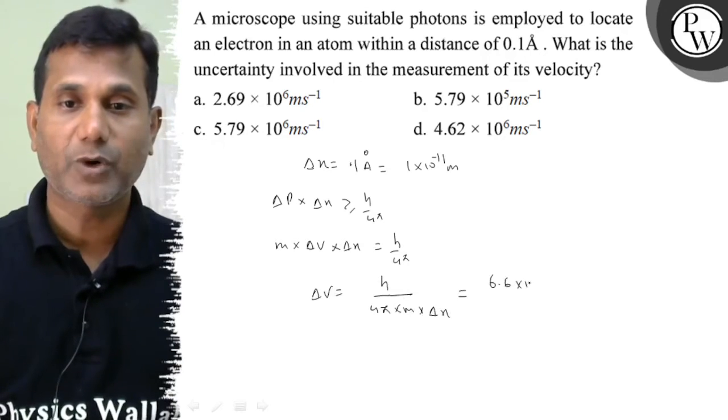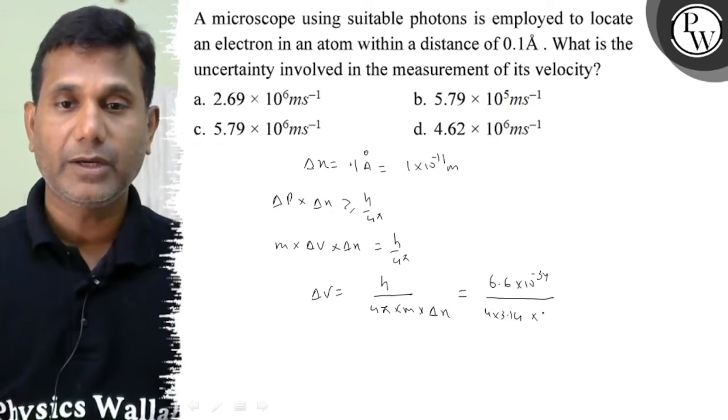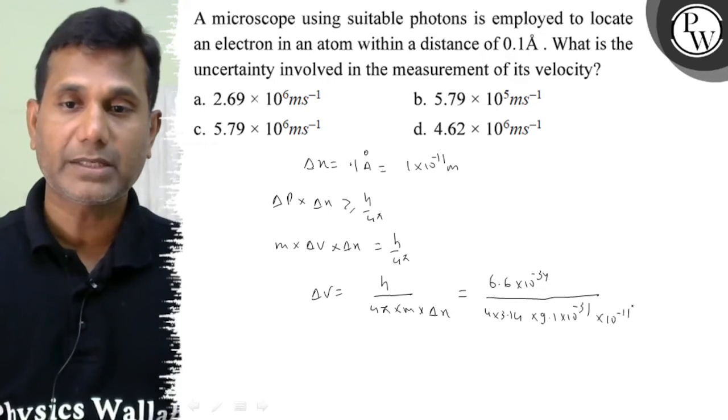Now, 6.6 into 10 to the power minus 34, divided by 4 into 3.14 into 9.1 into 10 to the power minus 31 into 10 to the power minus 11.